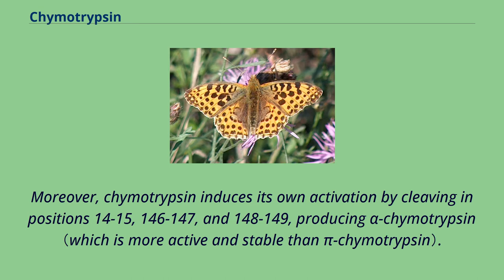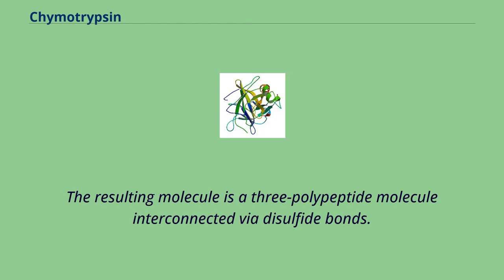Moreover, chymotrypsin induces its own activation by cleaving at positions 14-15, 146-147, and 148-149, producing alpha-chymotrypsin. The resulting molecule is a 3-polypeptide molecule interconnected via disulfide bonds.